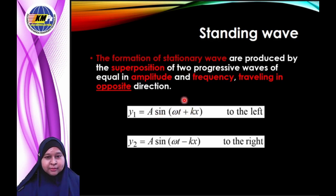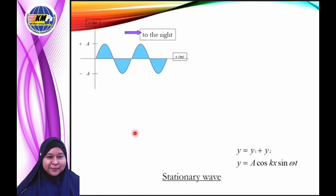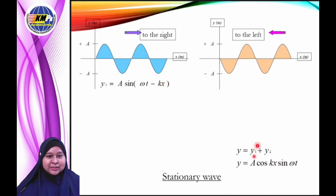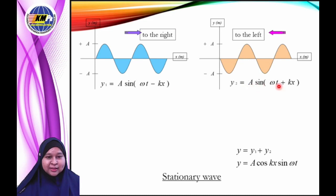The positive sign shows the wave propagates to the left. Y2 is equal to A sine of (omega t minus kx). The negative sign shows the wave propagates to the right. Please refer to this diagram. The first graph shows the wave propagating to the right with equation Y1 = A sin(ωt − kx). The second graph shows the wave propagating to the left with equation Y2 = A sin(ωt + kx). When two progressive waves meet together, they form a stationary wave.